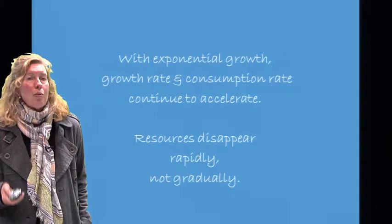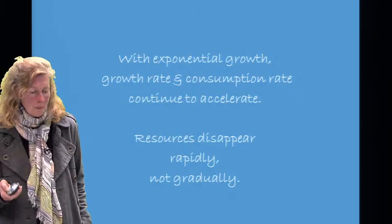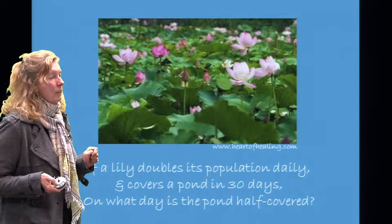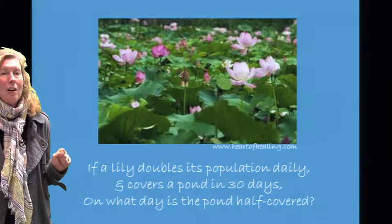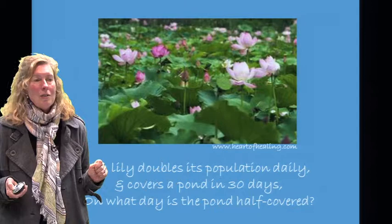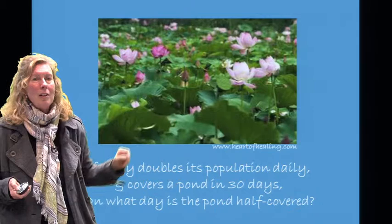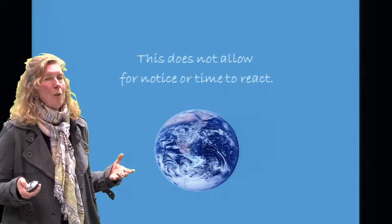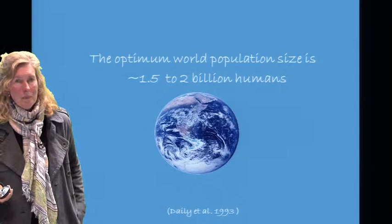With exponential growth, our growth rate and consumption rate continue to accelerate. Resources disappear very rapidly, not gradually. A proverb nicely illustrates this: if a lily doubles its population daily and covers a pond in 30 days, on what day is the pond half covered? The answer is the 29th day. On the 29th day you look out and see only half the pond covered, thinking you have time to deal with it — but the next day the pond is completely covered. Exponential growth gives no time for notice or reaction.